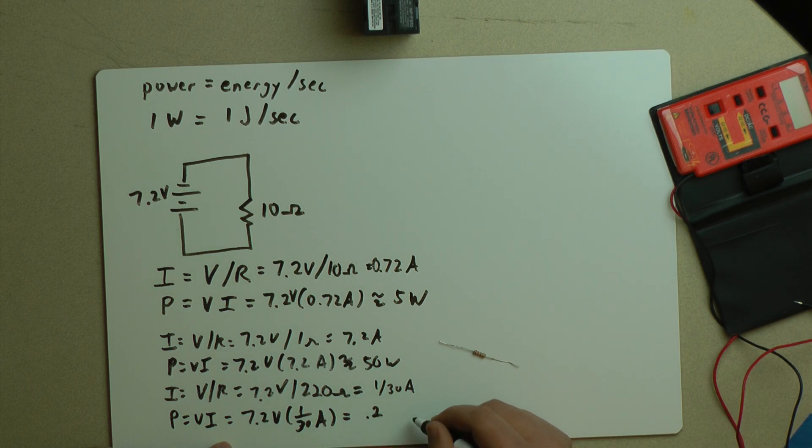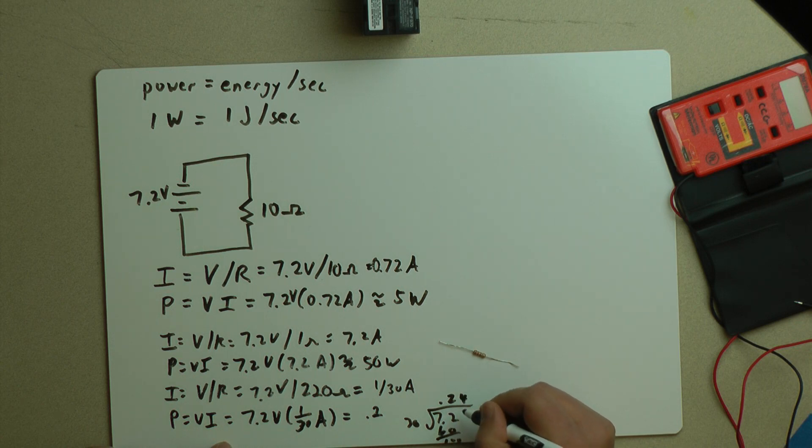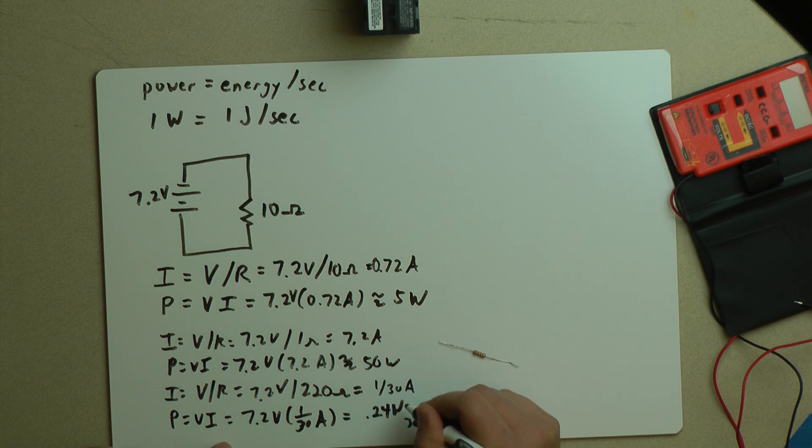So power equals V times I. Let's see here, that's about 0.24 watts. Yes, this is about 0.24 watts.